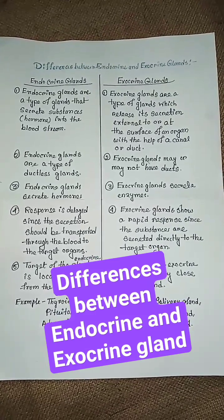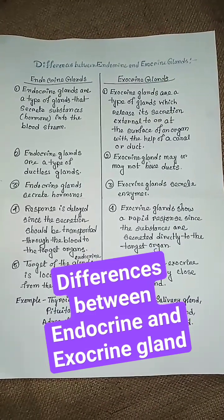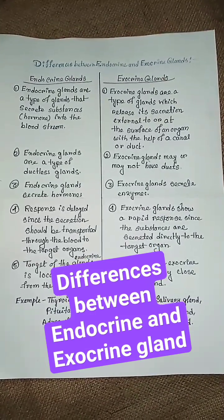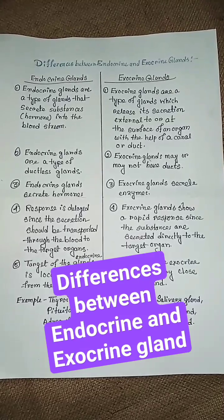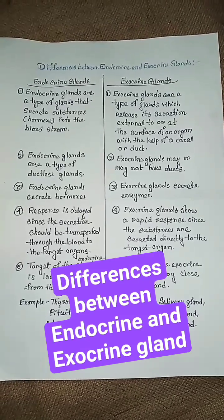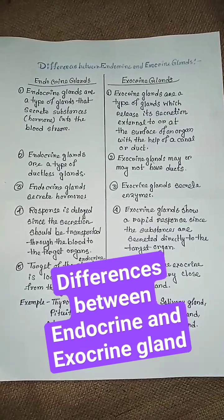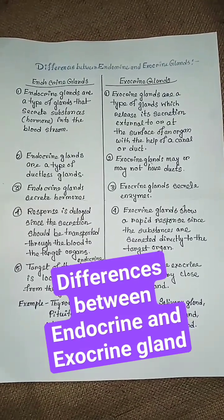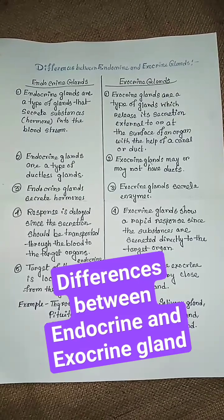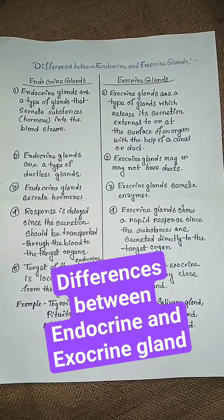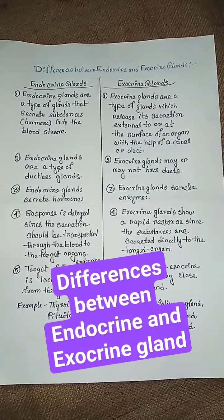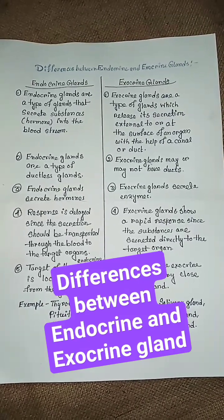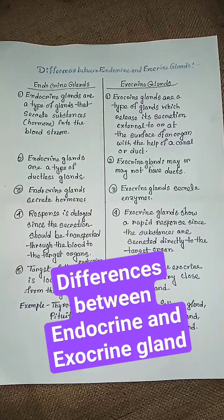Exocrine glands show a rapid response since the substances are secreted directly to the target organ. The target of endocrine glands is located away from the gland, but the target of exocrine glands is very close to the gland.